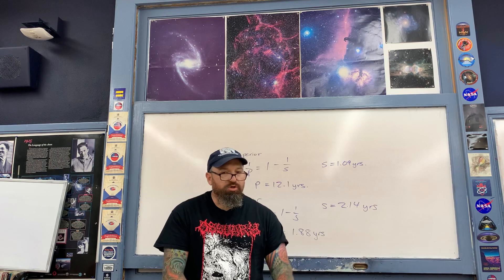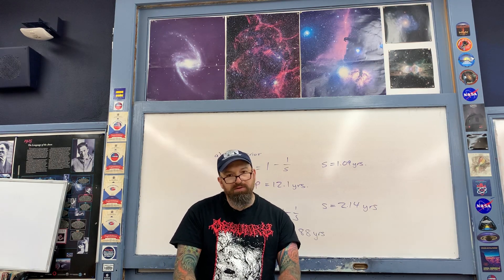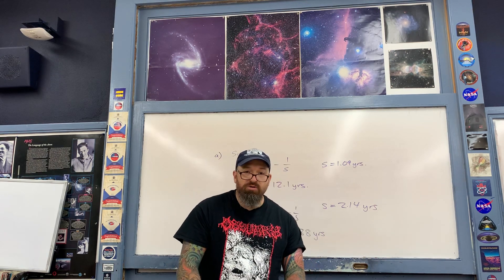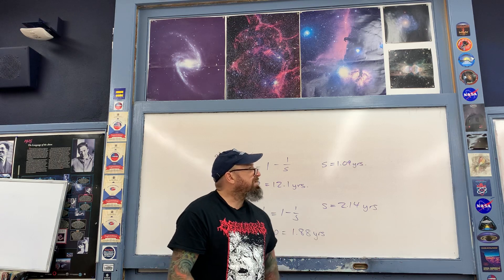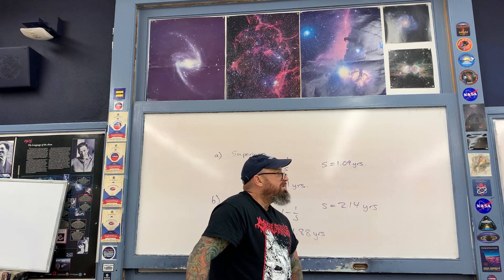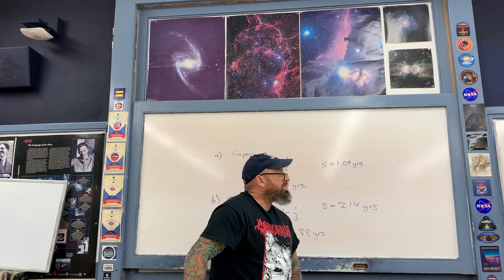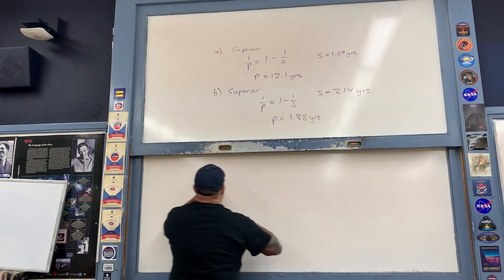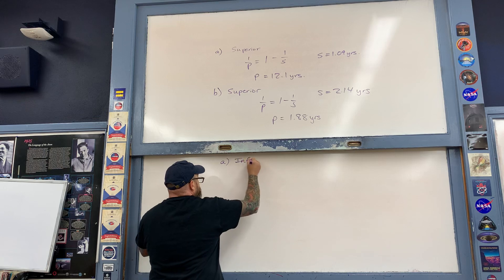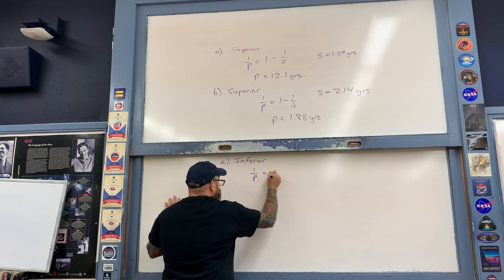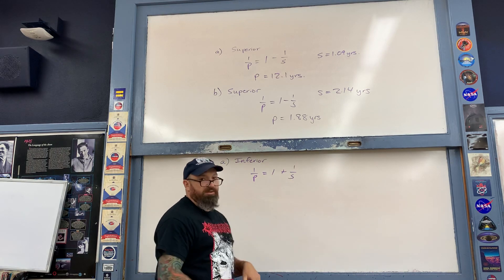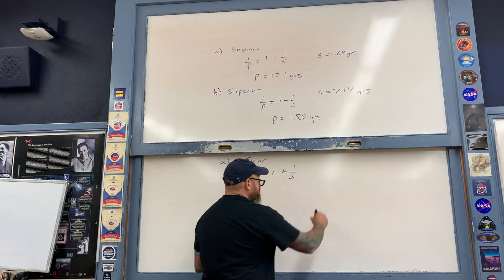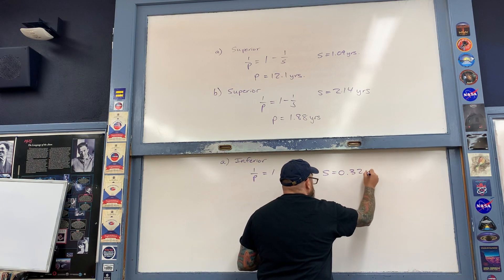The second example is once again Copernicus's calculations, but specifically now for inferior planets. Calculate the sidereal periods P of the following inferior planets: the synodic period of Mercury is 0.32 years and the synodic period of Venus is 1.6 years. For inferior planets we use the Copernican formula with a plus sign, as opposed to the minus sign used for superior planets.